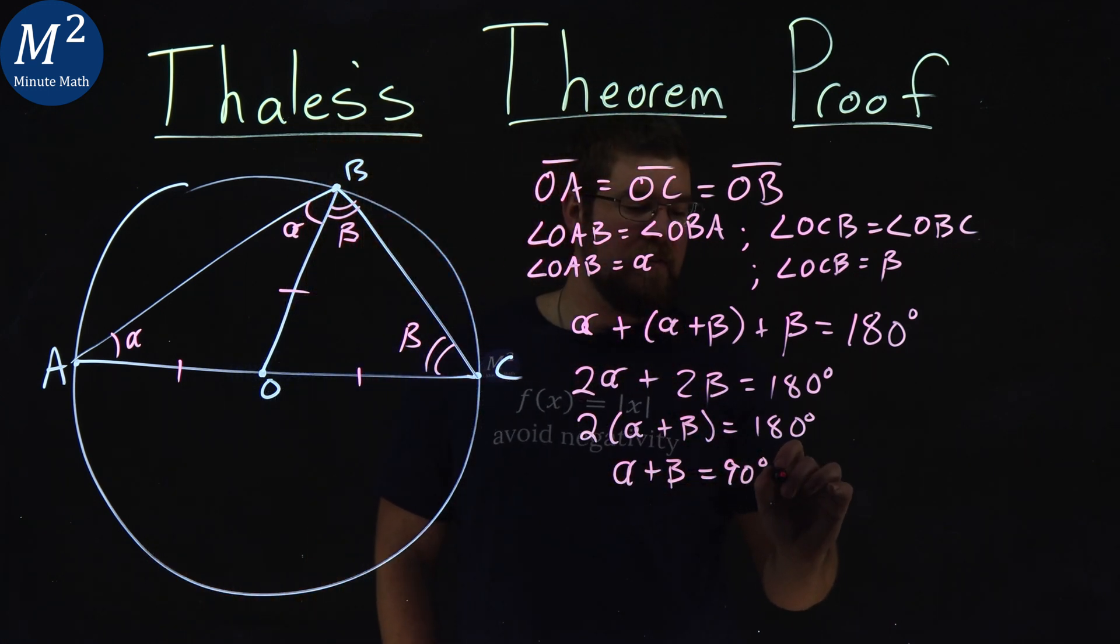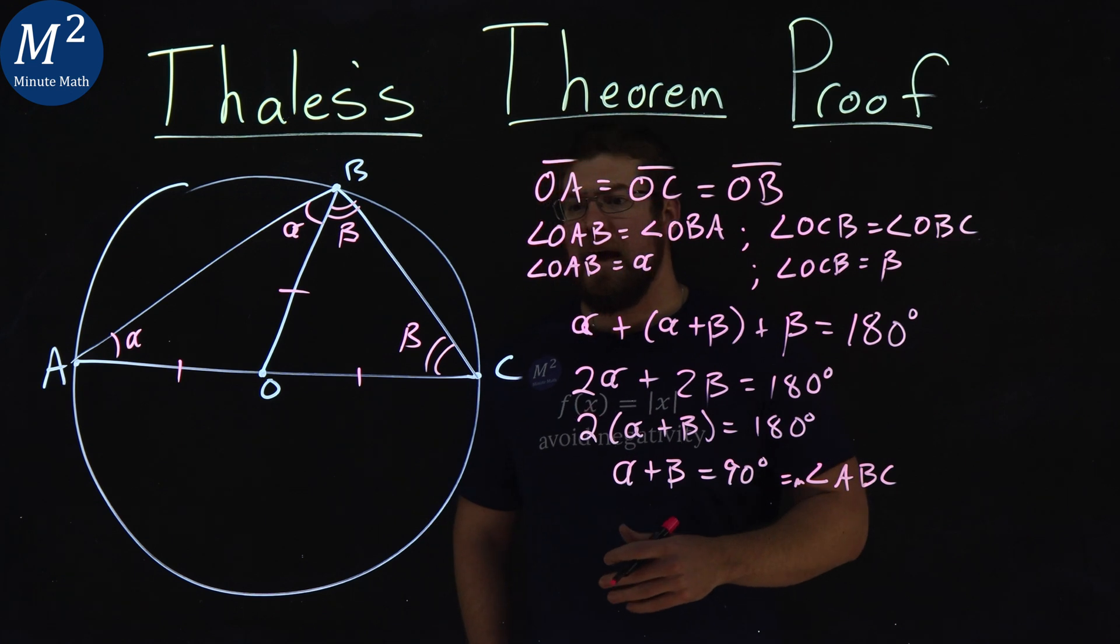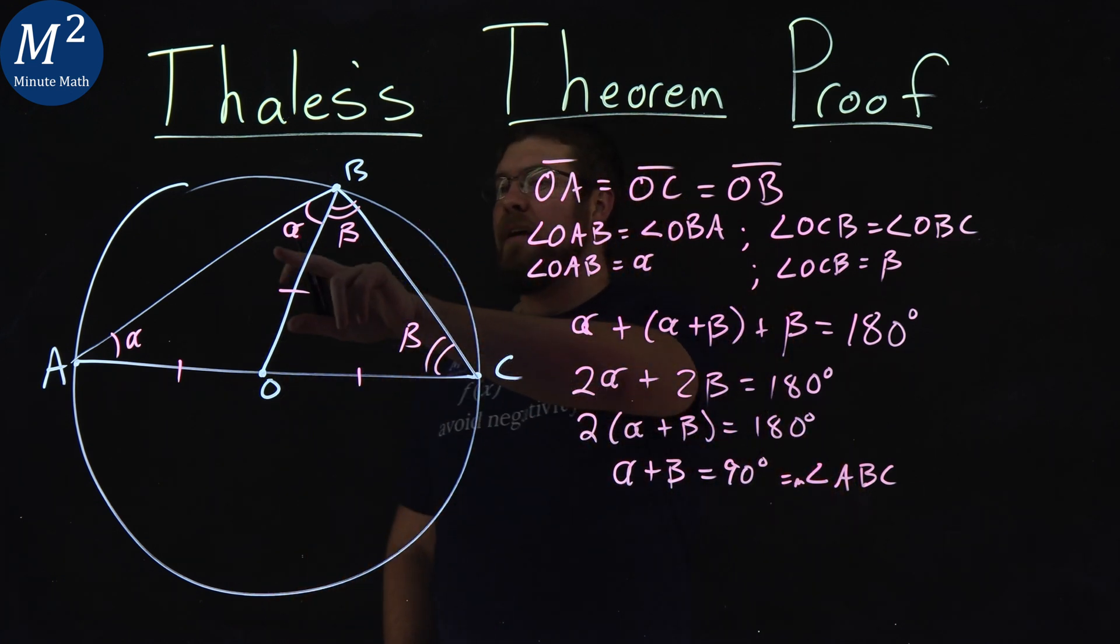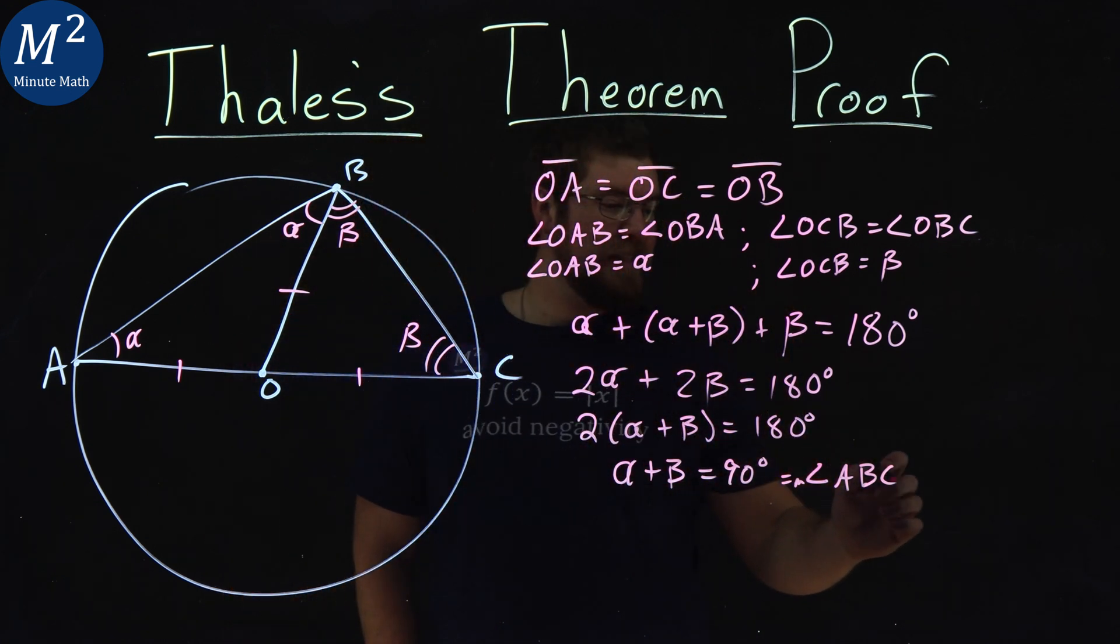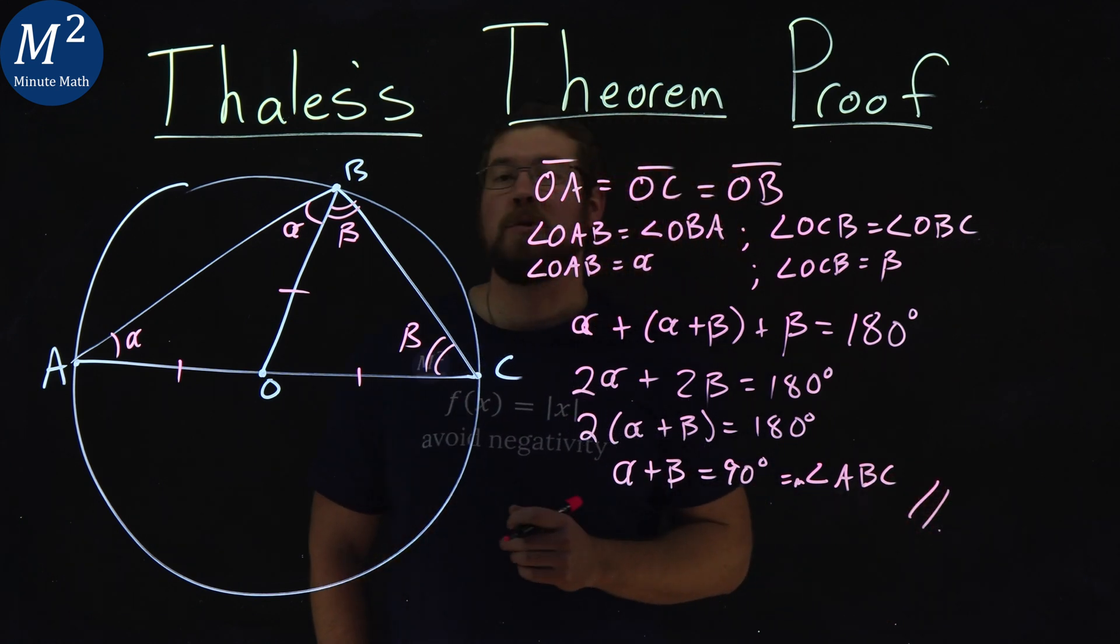And notice, alpha plus beta is equal to angle ABC, the measurement of angle ABC. And then there we have it. We show, or proven, that our angle ABC is equal to 90 degrees.